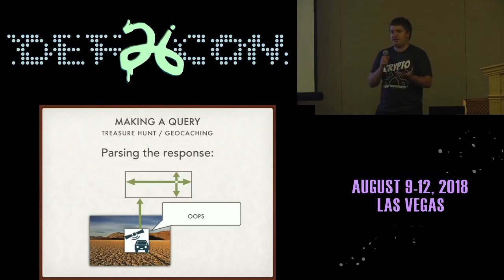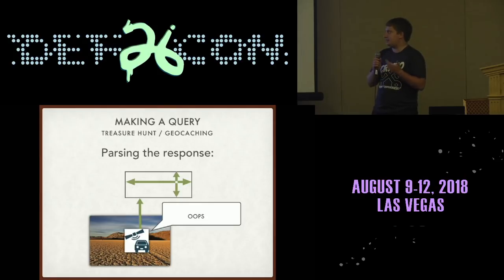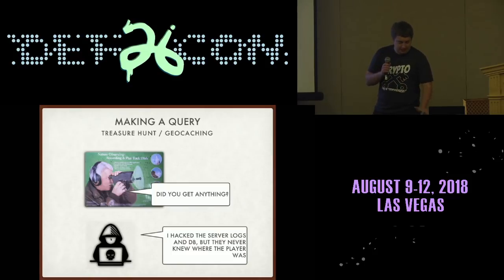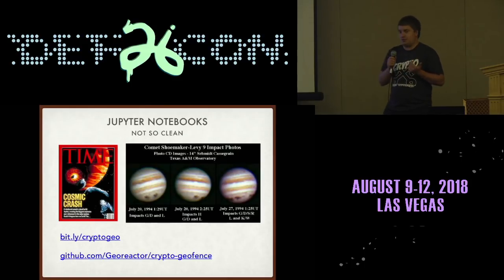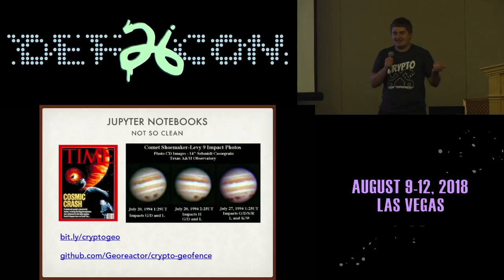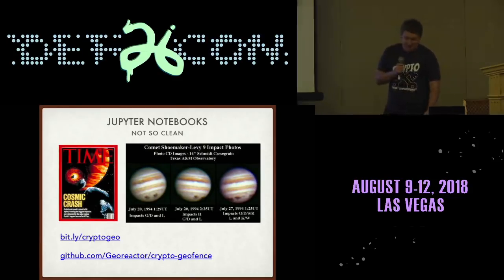The only one who can actually decrypt and parse the response is the initial user. They get it back, find out they're still south of the target area, but they don't have to reveal that to anyone else. Even if our hacker friends get inside the server and look at the logs and database — any information the server ever had — they're not able to decrypt the original latitude and longitude. I tried to make a Jupyter notebook for all of you, but it created a catastrophic error. If someone wants to look at my code, there's a bit.ly link.